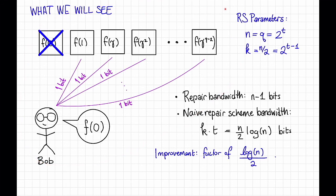For this particular parameter regime, Bob can recover f of 0 by downloading just one bit from each of the surviving nodes. It turns out that you can pretty easily modify the scheme that I just showed in order to recover f of 1 if that failed, or f of gamma squared if that failed, or whatever.